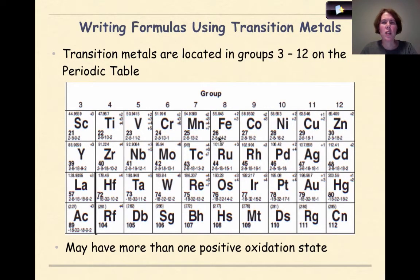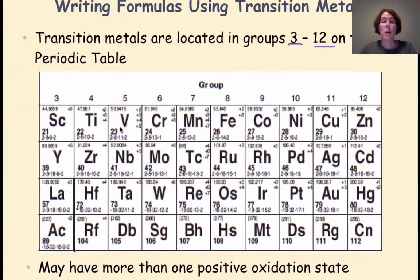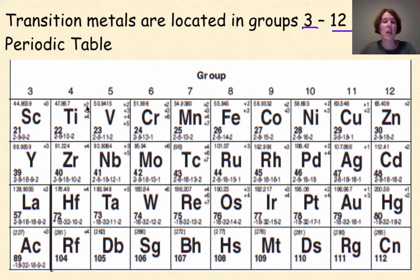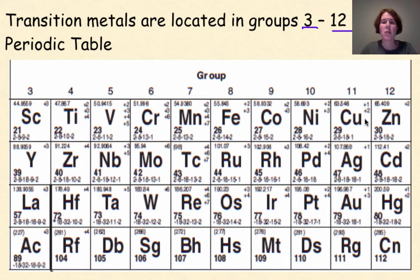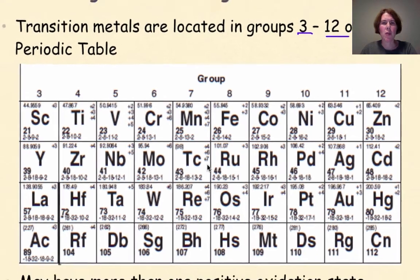Writing formulas using transition metals: transition metals are located in groups 3 through 12 on the periodic table. They include elements like titanium, manganese, iron, and cobalt. The key thing to remember is that many transition metals have multiple oxidation states — multiple charges you can use in your chemical formulas. For example, copper can be plus one or plus two, while zinc will only be plus two.